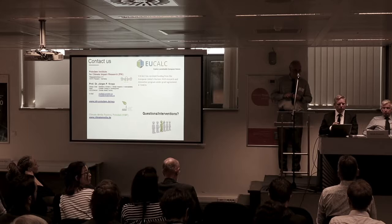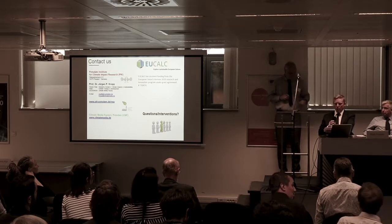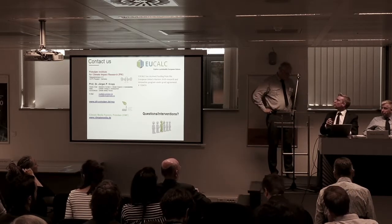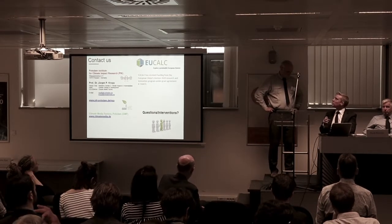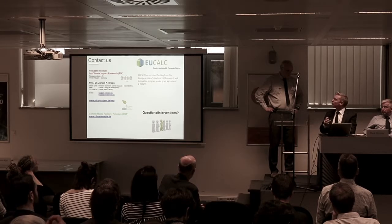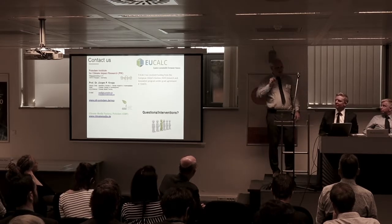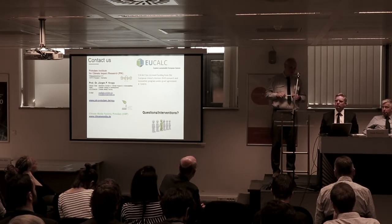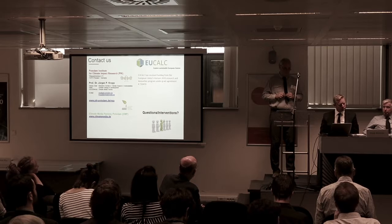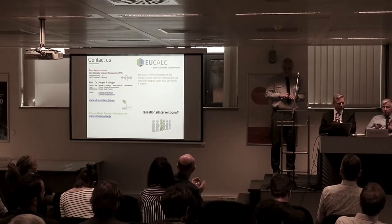Another question: one key feature of the UK climate calculator was information being made available to calibrate other studies — for example, the extent of smart grids. Will that information be available for other modeling teams to access and use? Yes — we have a strict open source, open data philosophy. All things, including the source code of the model, will be made available to the public. Thank you very much, and thank you for keeping to the time.